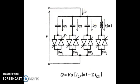This combination of thyristor switched capacitors and thyristor controlled reactors is called an SVC — a Static VAR Compensator. The combination can vary: it does not need to be TSC plus TCR specifically. It can be a set of fixed capacitors plus switched capacitors plus a controlled reactor, or other configurations. Typically, the reactor is a single entity while multiple capacitors are used.